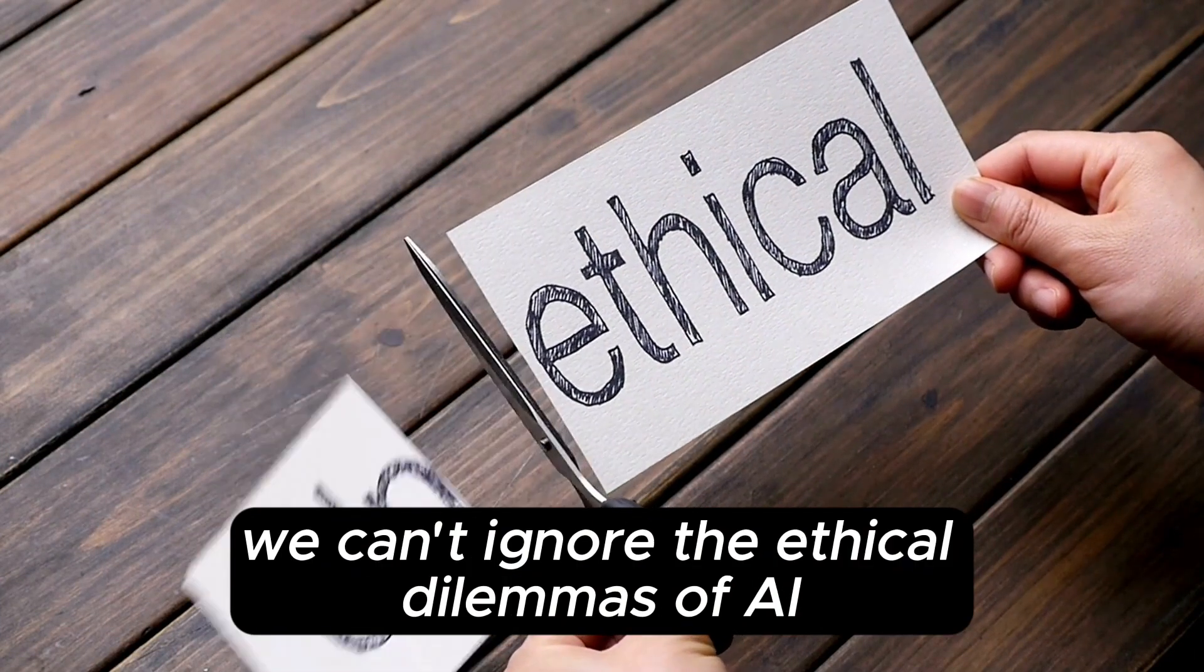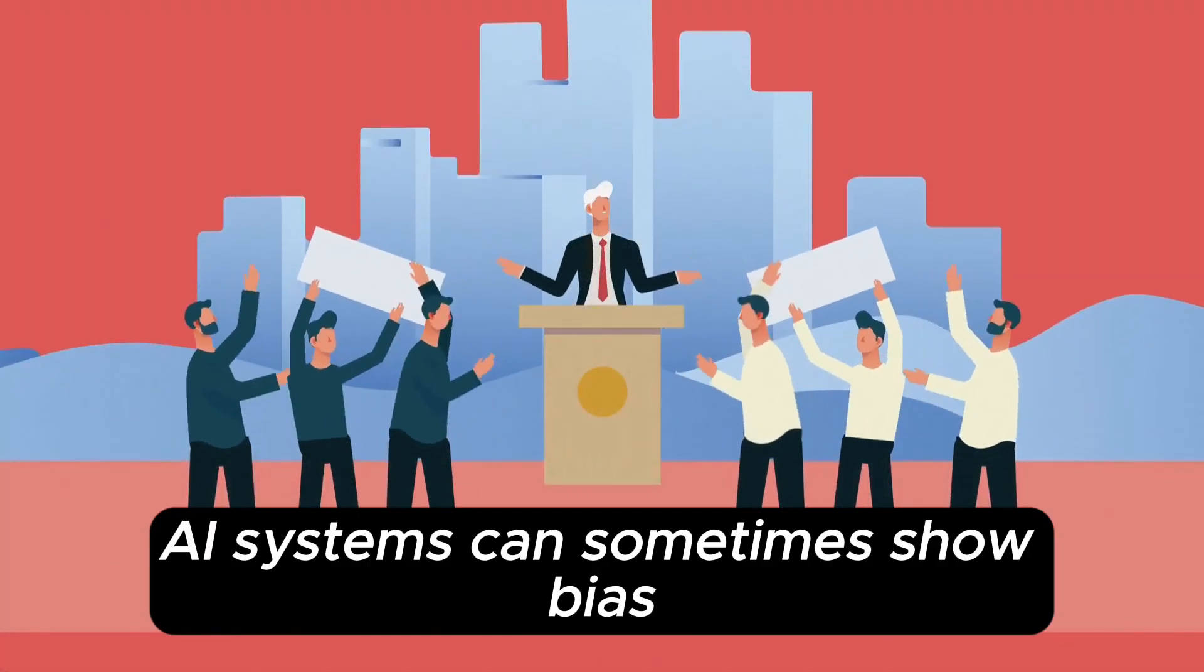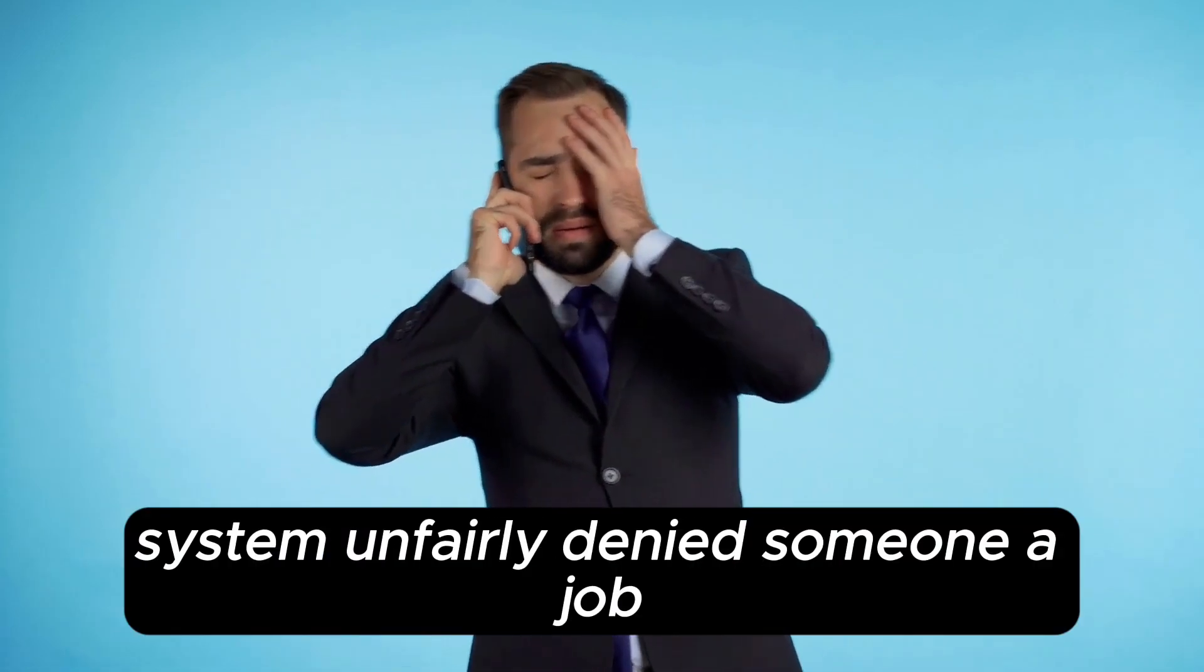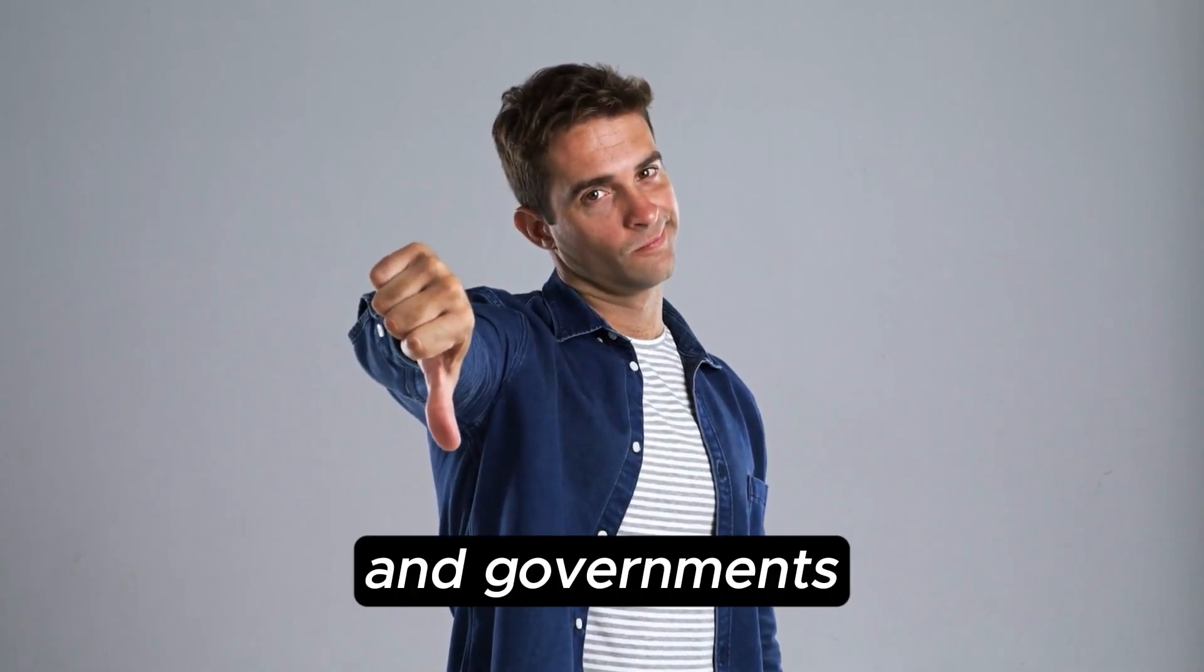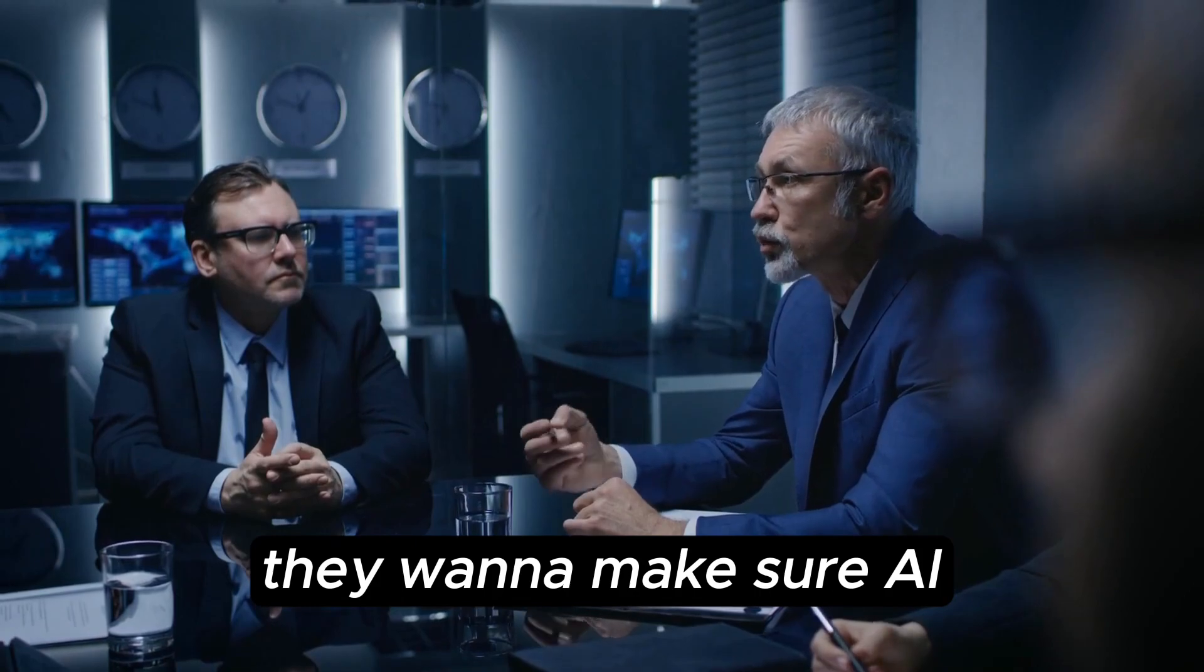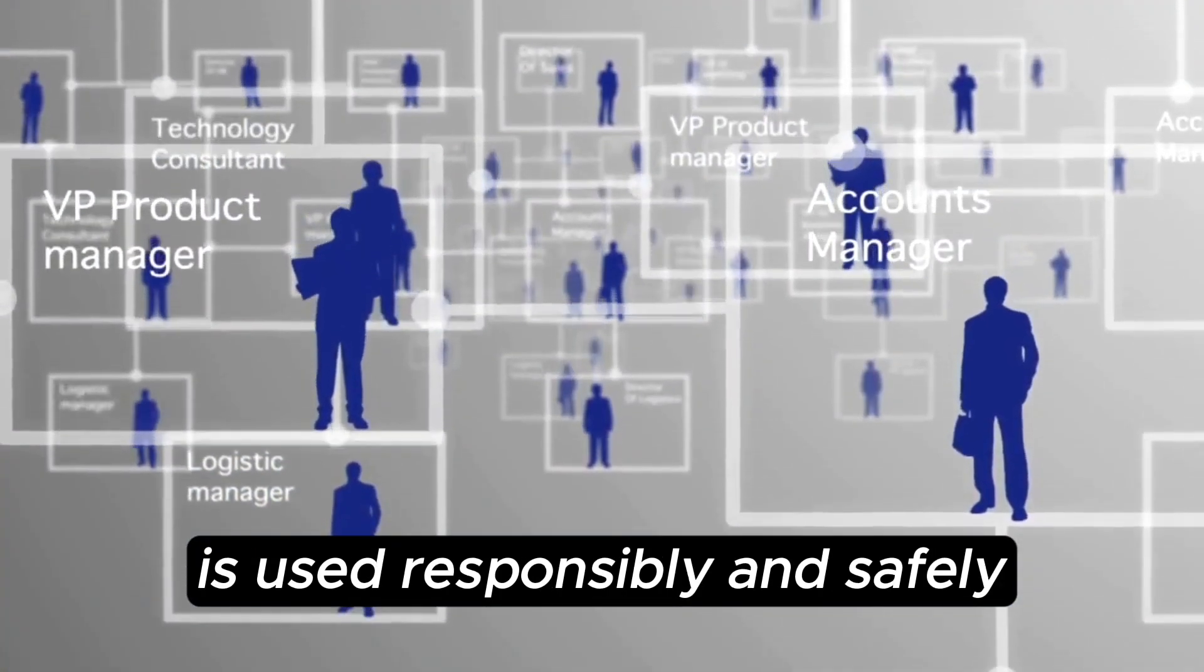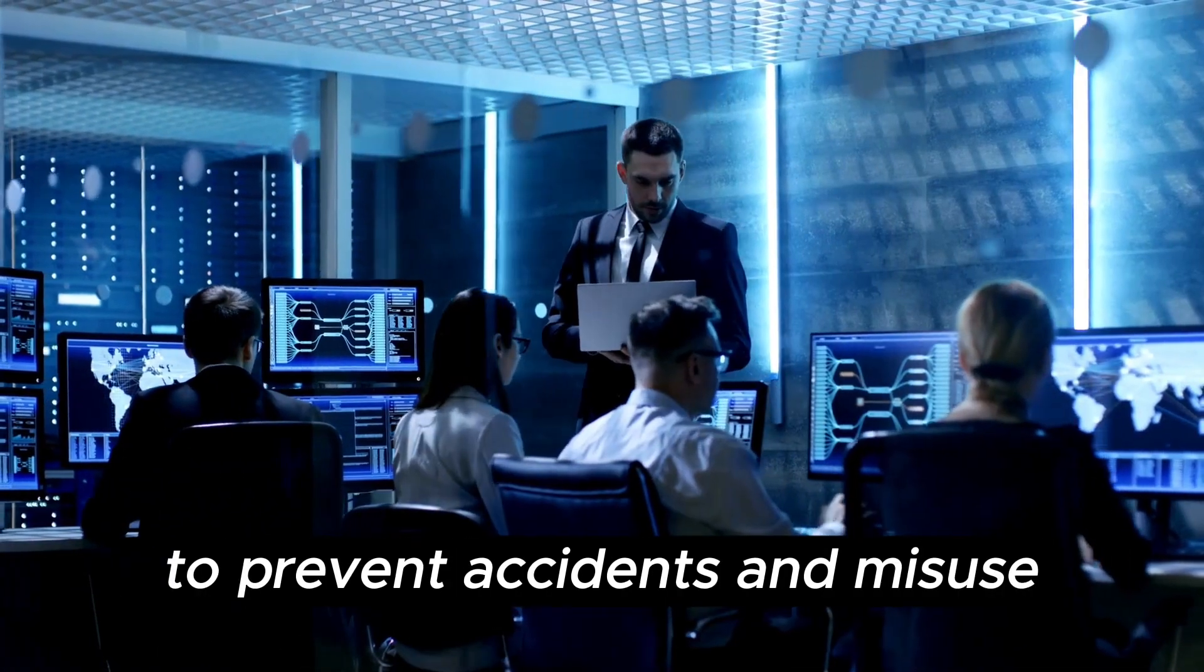Speaking of ethics, we can't ignore the ethical dilemmas of AI. AI systems can sometimes show bias or make unfair decisions. Imagine if an AI system unfairly denied someone a job because of their background. That's a big concern. And governments are starting to think about regulating AI. They want to make sure AI is used responsibly and safely. It's a bit like having traffic rules for the digital world to prevent accidents and misuse.